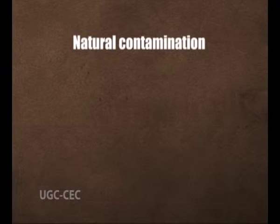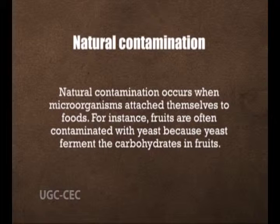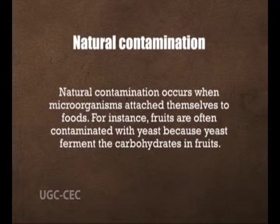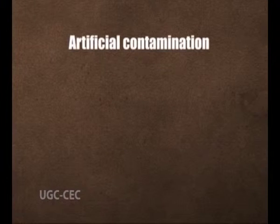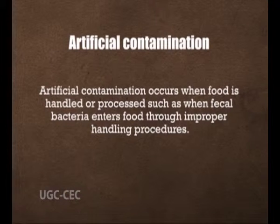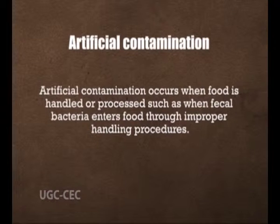Natural contamination occurs when microorganisms attach themselves to foods. For instance, fruits are often contaminated with yeast because yeast ferments carbohydrates in fruits. Artificial contamination occurs when food is handled or processed, such as when faecal bacteria enters food through an improper handling procedure.